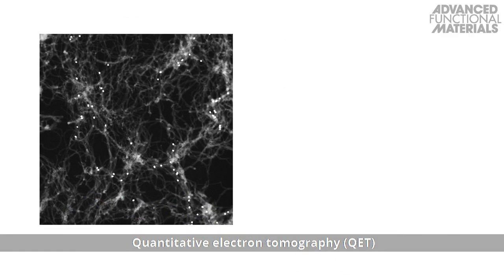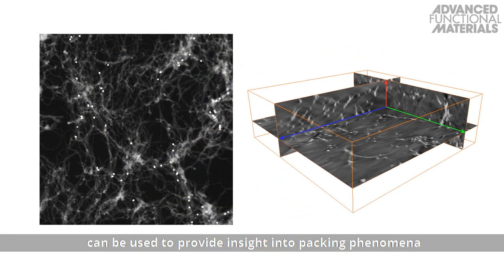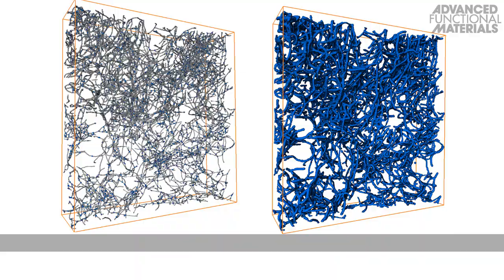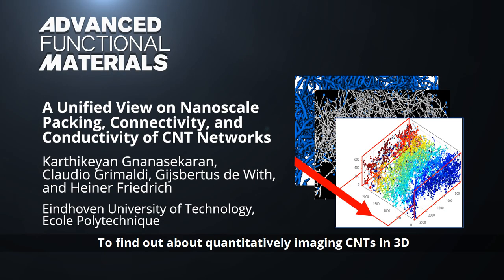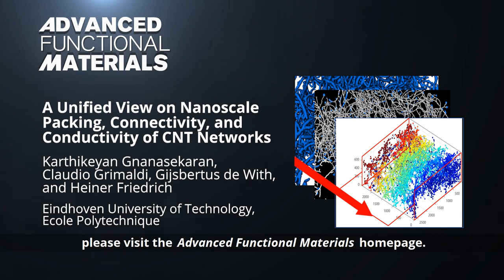Quantitative electron tomography can be used to provide insight into packing phenomena and may lead to the design of materials with improved functional properties. To find out more about quantitatively imaging CNTs in 3D to assess density and distribution, please visit the Advanced Functional Materials homepage.